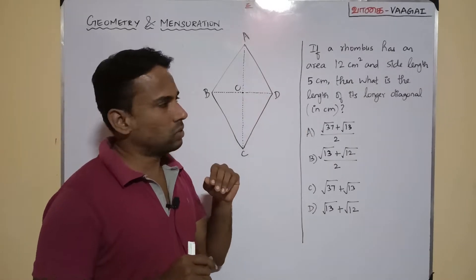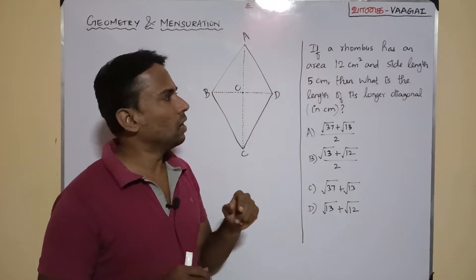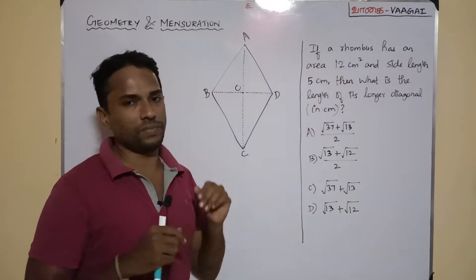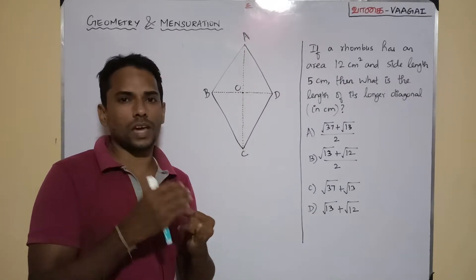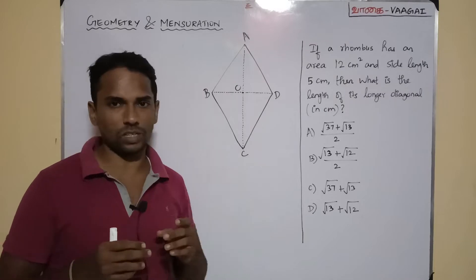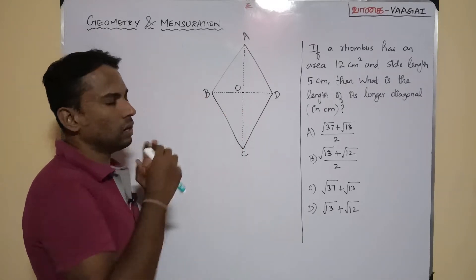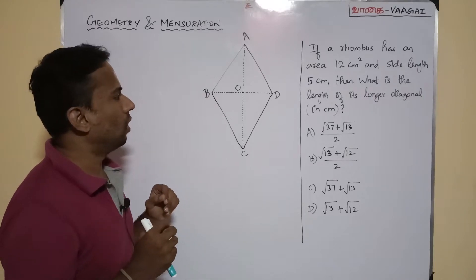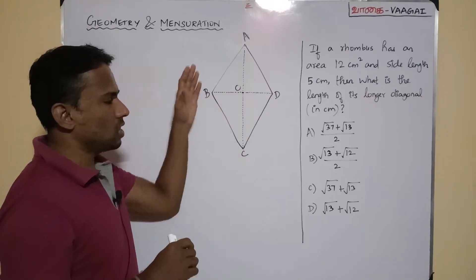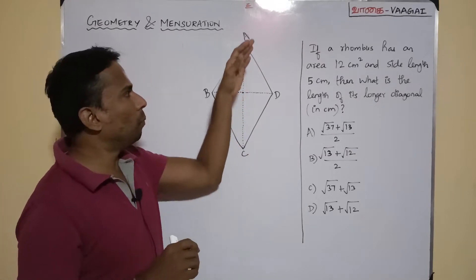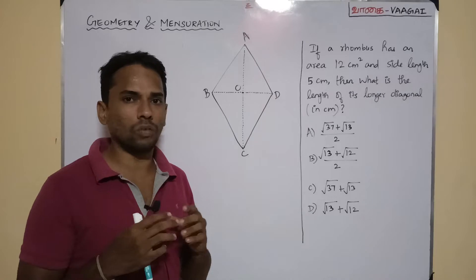If a rhombus has an area of 12 centimeter square and a side length of 5 centimeter. So we have a rhombus with its area and side given in the question. Hope you all know the basic properties of a rhombus. I have drawn here a rhombus — all four sides are equal, opposite angles are equal, and what is special about the diagonals of a rhombus?